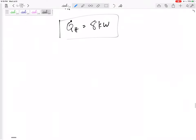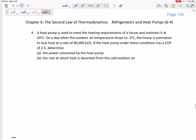Not too bad. Just a little bit of units right there. Let's do another one real quick. A heat pump is used to meet the heating requirements of a house, maintain it at a certain temperature. On a day when the outside temperature drops to negative two, the house is estimated to lose heat at a rate of 80,000 kilojoules per hour. If the heat pump under these conditions have a coefficient of performance of 2.5, determine the power consumed by the heat pump and the rate at which heat is absorbed from the cold outside air.